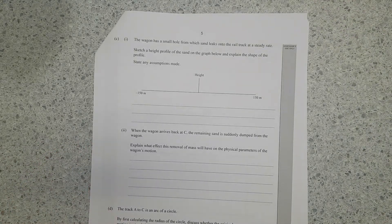The wagon has a small hole from which the sand leaks onto the rail track at steady rate. Sketch the height profile of the sand on the graph below and explain the shape of the profile. So we'll just think about this for a second. At the middle, it's moving really quickly, max velocity. At the tops, it stops and turns around. So at the tops, it's going to be spending a lot of time there. At the middle, it's going to be whizzing past and then back up to the top again. So most of the sand should deposit at the top.